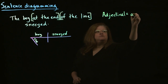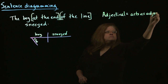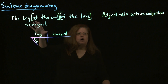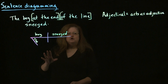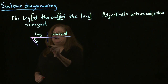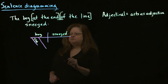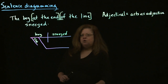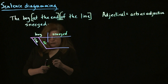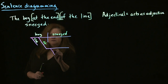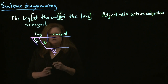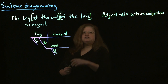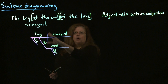Since 'at the end' is telling which boy, the prepositional phrase is connected to the word 'boy.' The way we draw a prepositional phrase in a diagram is with a diagonal line where we put the preposition, and then a level line where we put the object of the preposition — that is, the noun phrase. So we have 'at' on the diagonal line, and then 'the end' on the level line. This is an adjectival prepositional phrase describing the boy — it's saying which boy.